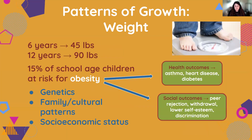Now looking at weight: at six years old, the average weight is about 45 pounds, and at 12 years old the average is about 90 pounds. This is also influenced by both genetic and environmental factors. Obesity accounts for about 15% of school-aged children — so 15% of school-aged kids are at risk for obesity. The rates of obesity have steadily increased since the 1970s, and many studies have linked overconsumption of soft drinks as one of the major contributors to childhood obesity. Sodas and sugary drinks are very normalized in many U.S. children's daily routines.